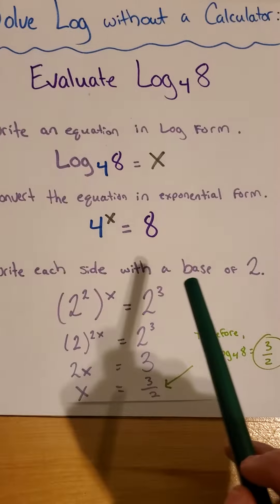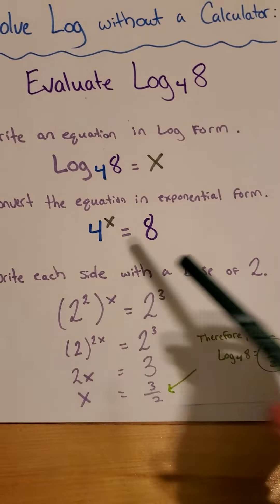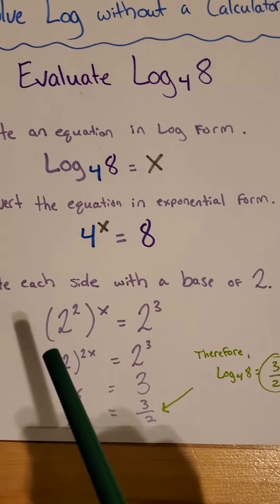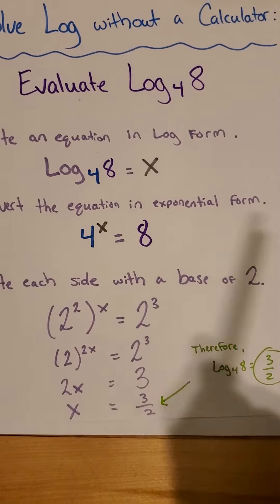Write each side with a base of 2. Why? Because they both have a common factor of 2. Okay. 2 to the second power, x, equals 2 to the third power.